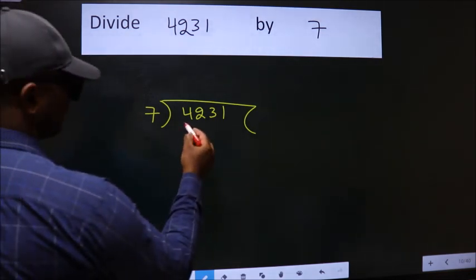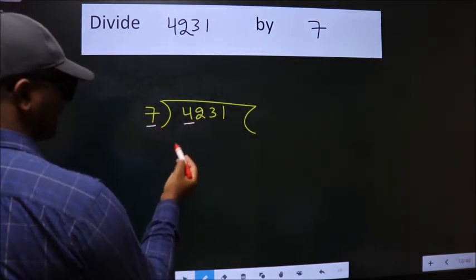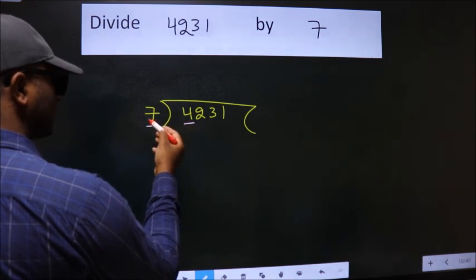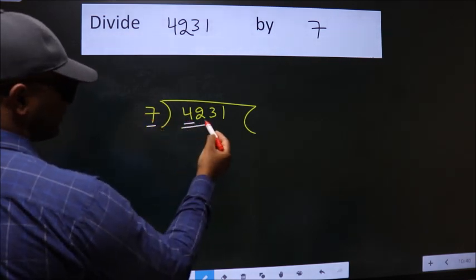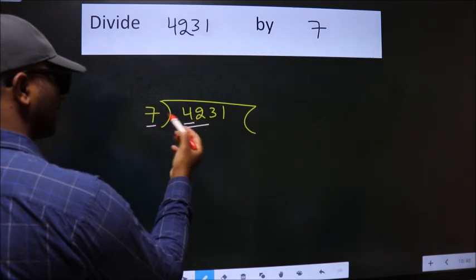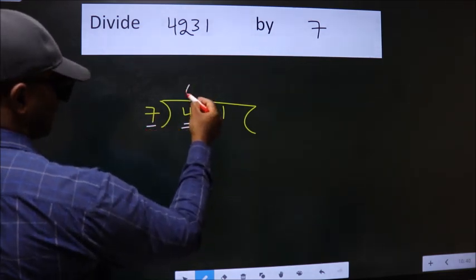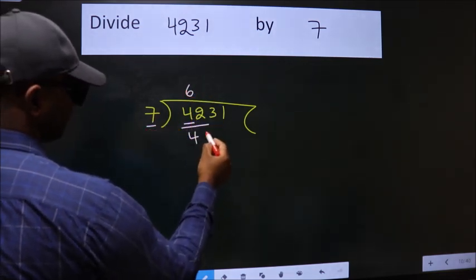Next, here we have 4. Here 7. 4 is smaller than 7, so we should take two numbers: 42. When do we get 42 in the 7 table? 7 times 6, 42.